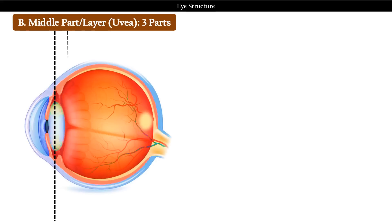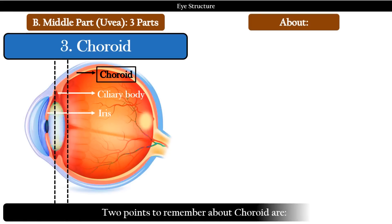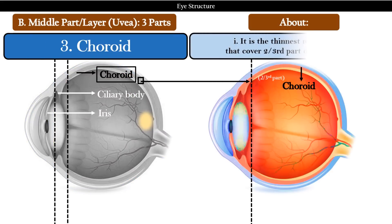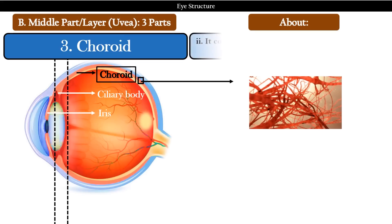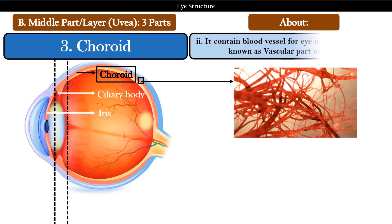Next is the middle part of the eye, also known as uvea, and it is also divided into three parts: choroid, ciliary body, and iris. Two points to remember about choroid are: first, it is the thinnest middle part that covers two-thirds of the middle eye. Second, it contains blood vessels for eye nutrition, and is therefore known as the vascular part of the eye.